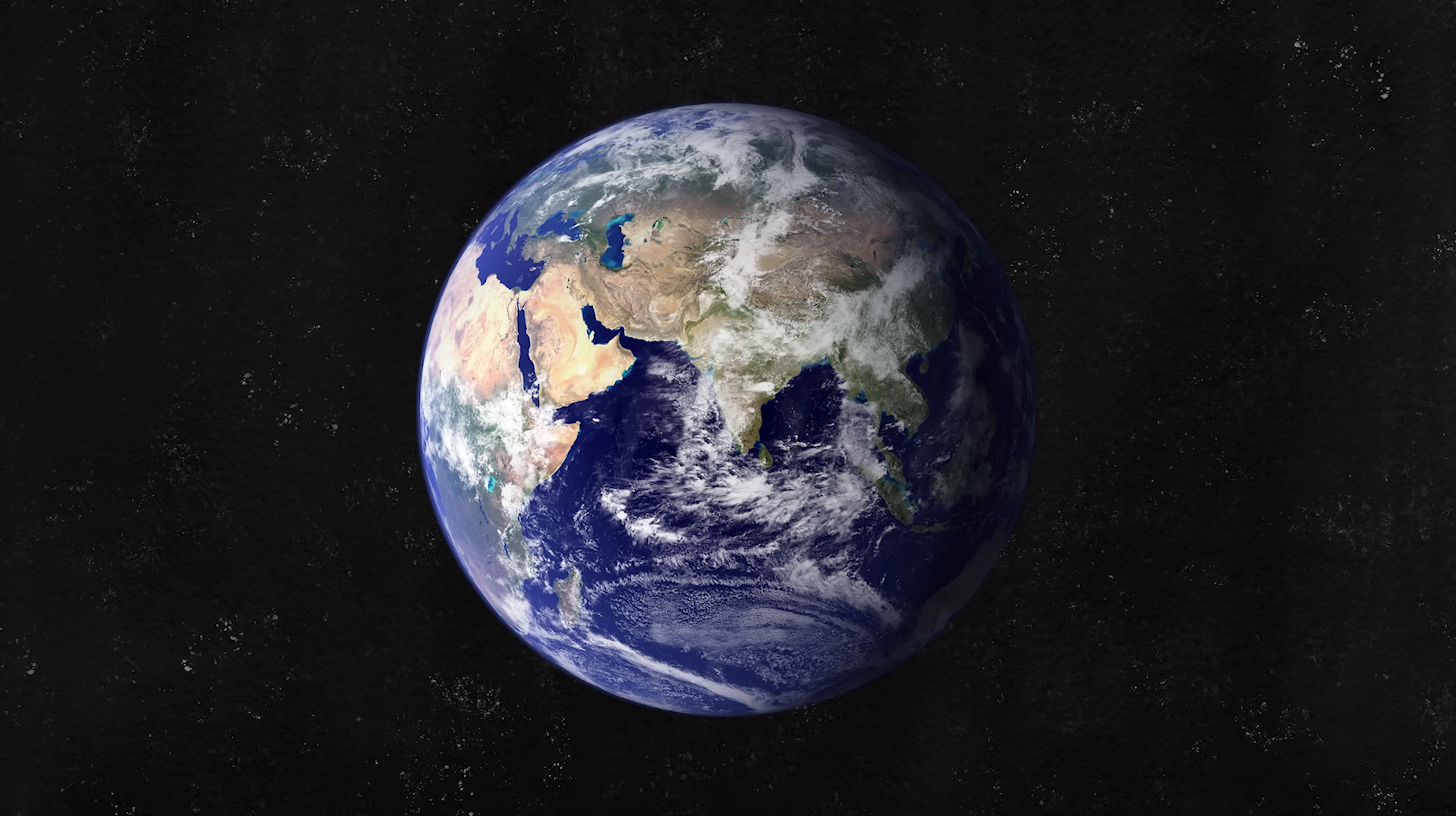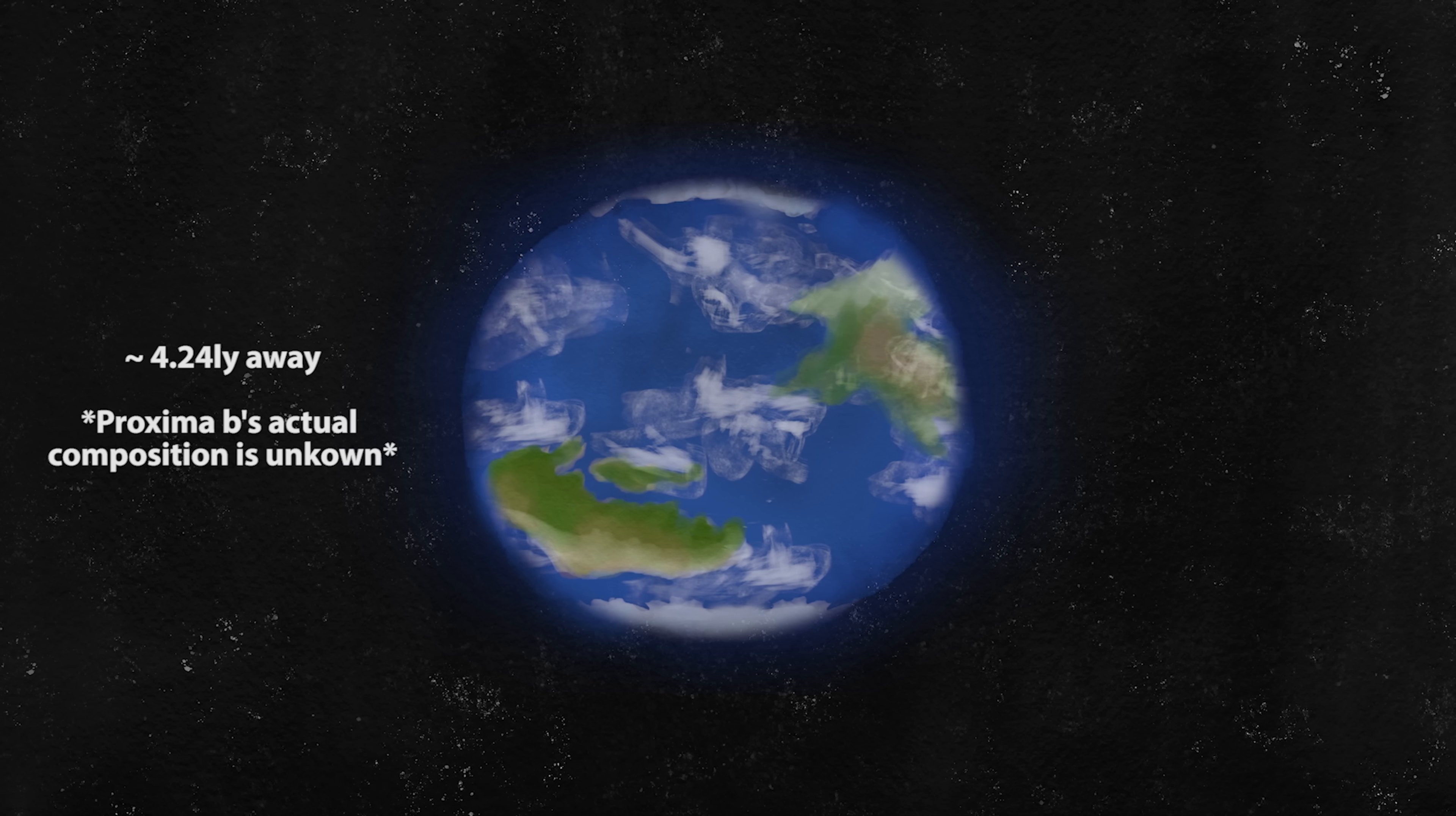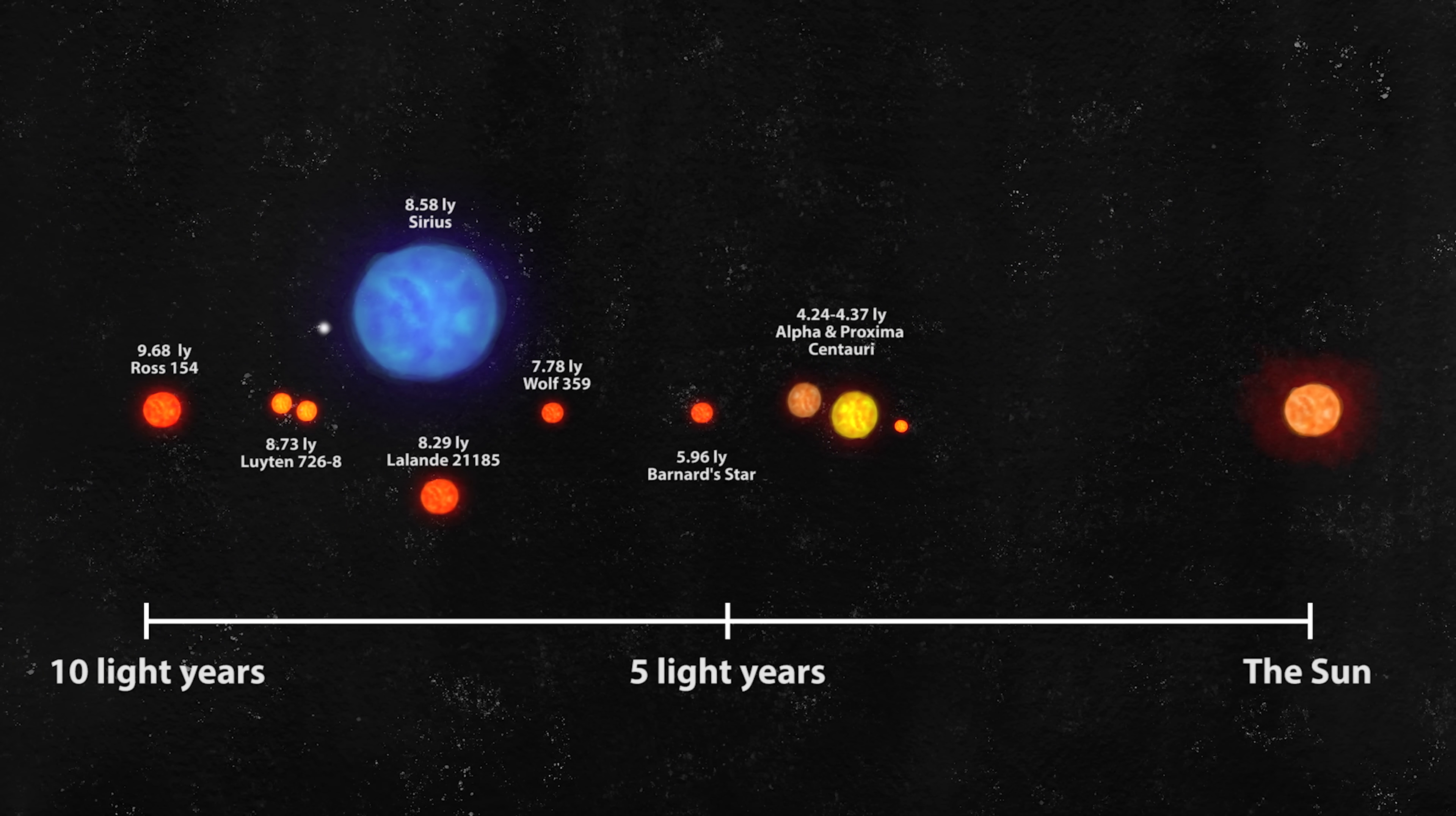If instead you targeted the closest exoplanet to us, Proxima b, at about four and a quarter light years away, the resolution would be even greater in the hundreds of meters scale. But there are not as many planetary systems to choose from right next door to us, relatively speaking.